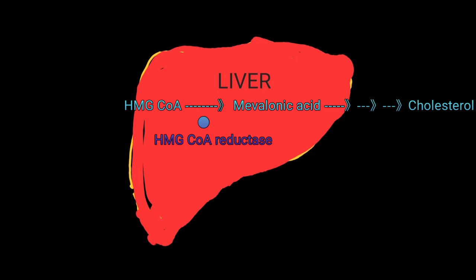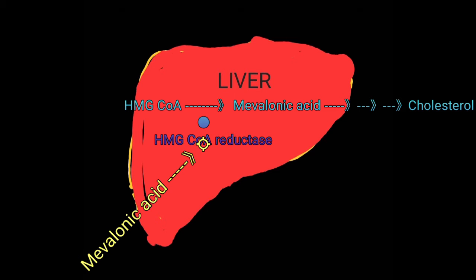The first regulatory mechanism is that cholesterol can inhibit this enzyme directly as a feedback inhibitor. Also, mevalonic acid, which is the product of HMG CoA reductase, can inhibit this enzyme competitively as a feedback inhibitor.